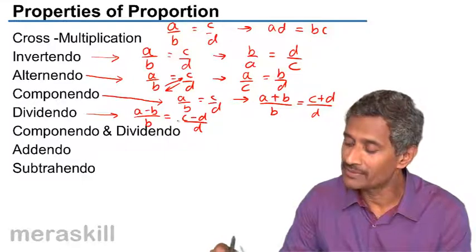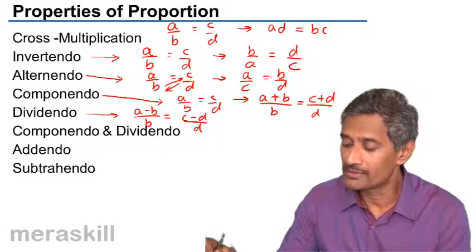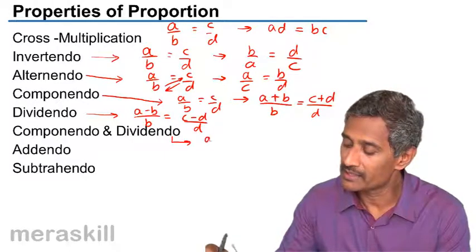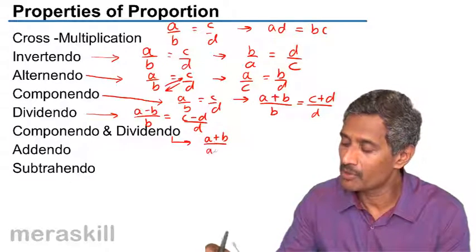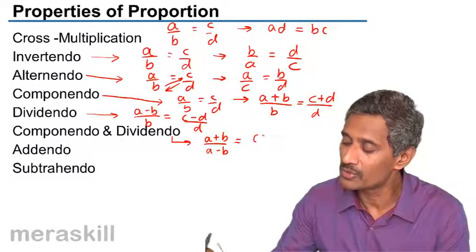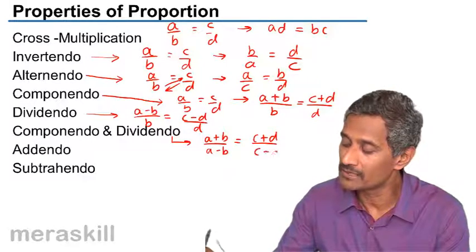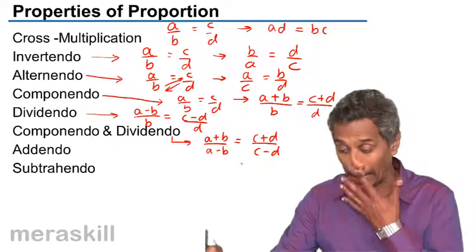And componendo and dividendo is a combination of these two, which will mean A plus B upon A minus B is equal to C plus D upon C minus D. As simple as that.